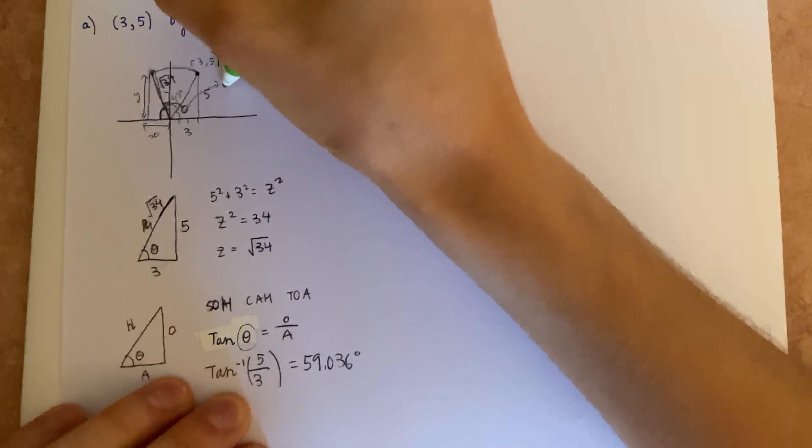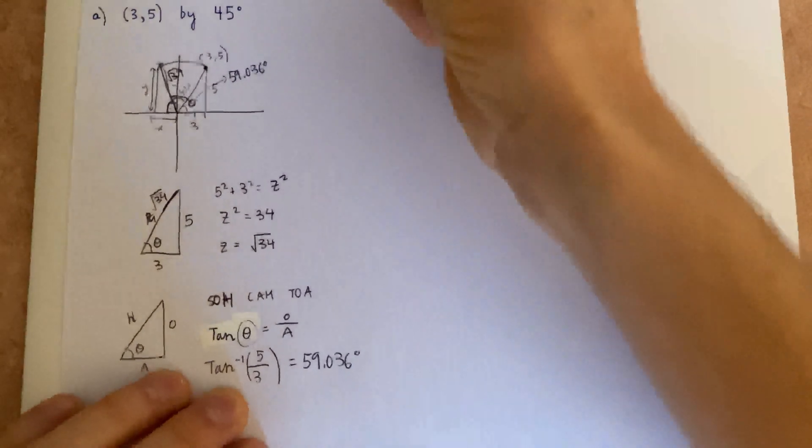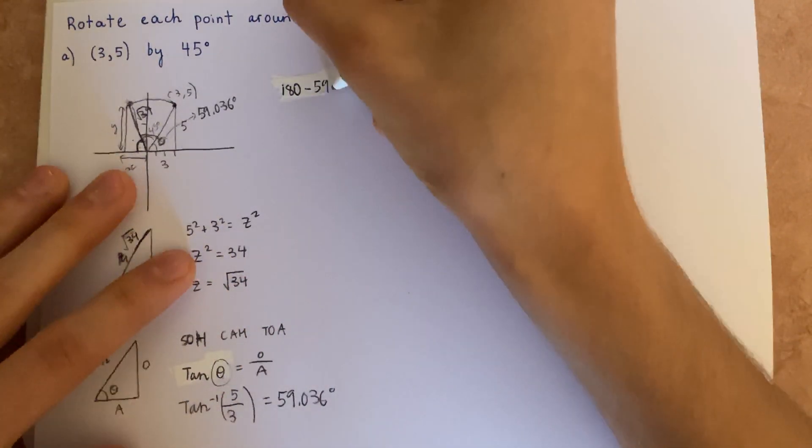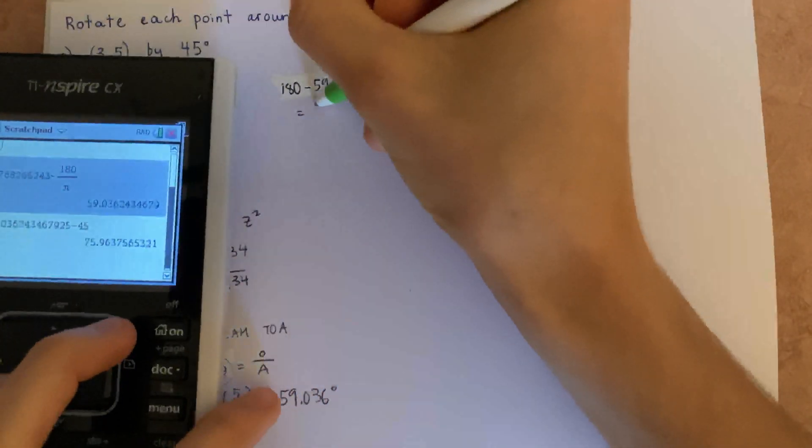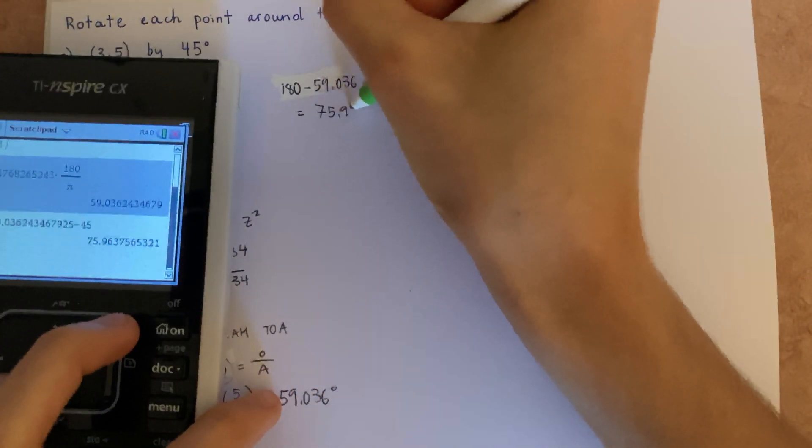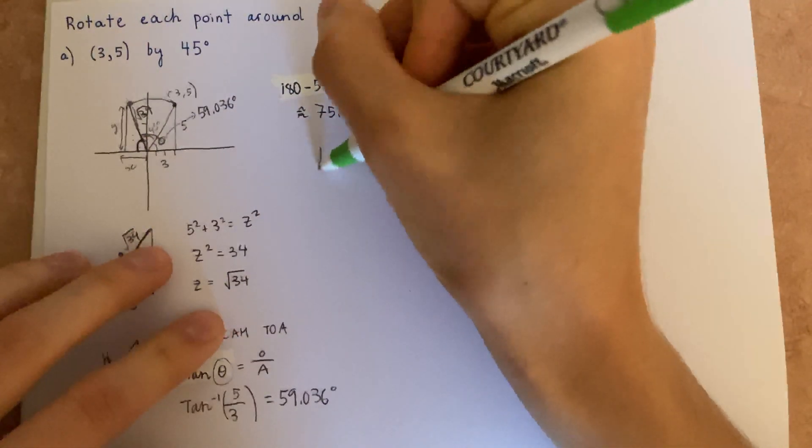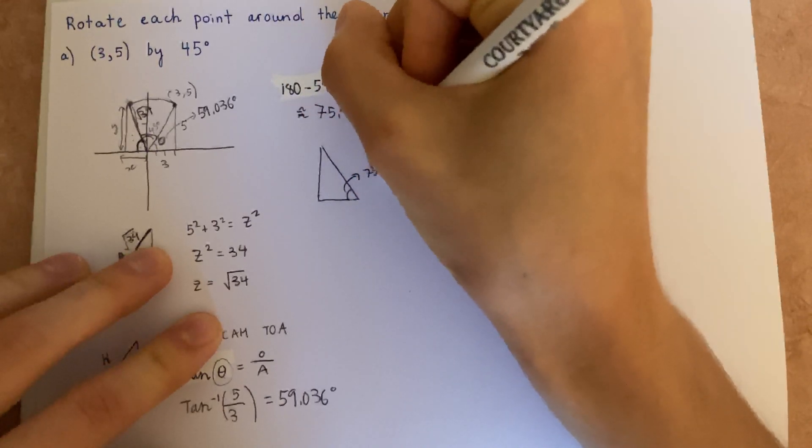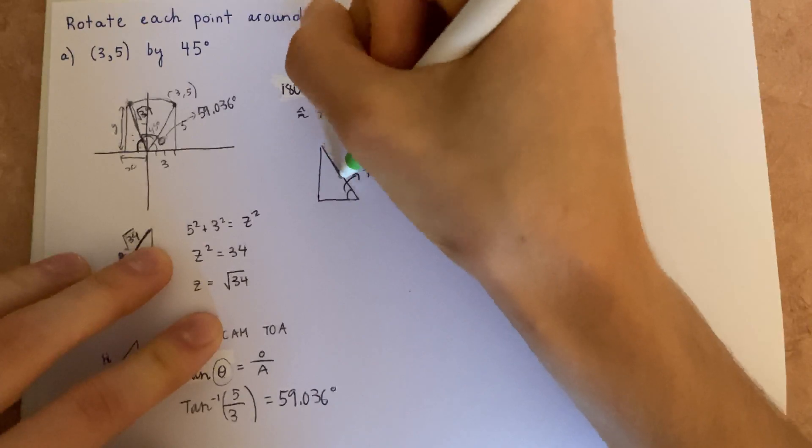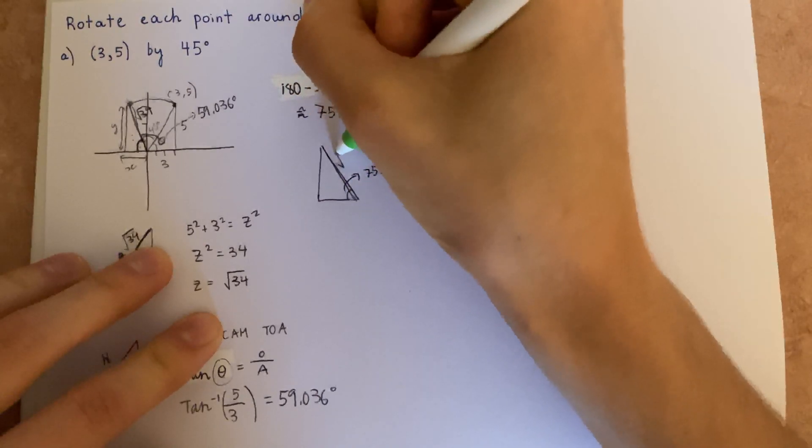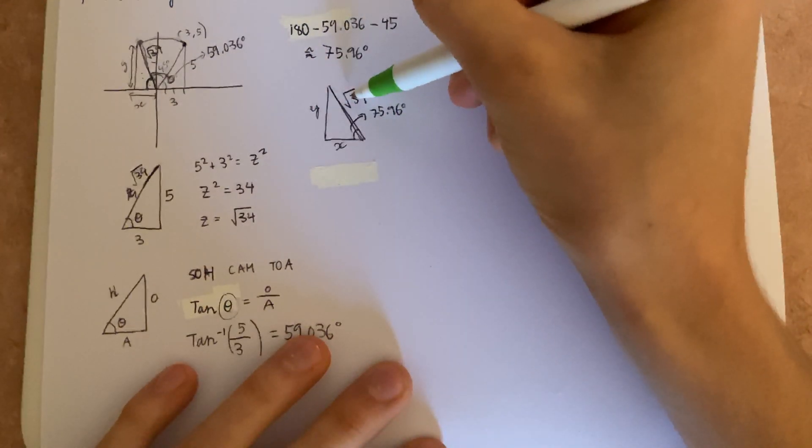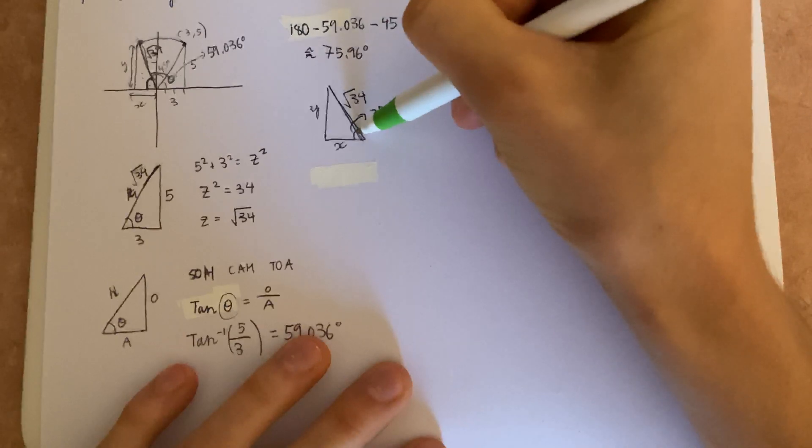That is 59.036 degrees. That means we can solve for this angle right here by subtracting 59.036 degrees and 45 degrees from 180. So that equals 75.96 degrees. So I'm going to draw out this triangle right here. This angle right here is 75.96 degrees. And we know the hypotenuse, this length, is the square root of 34.